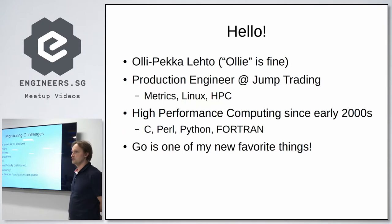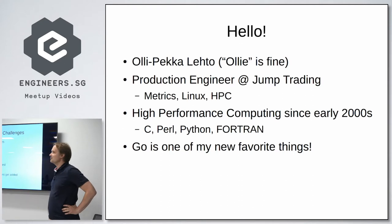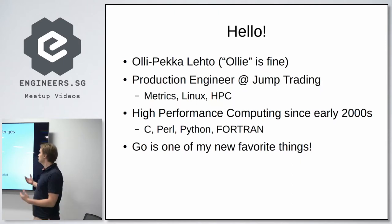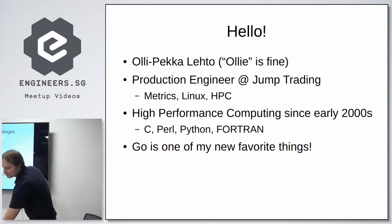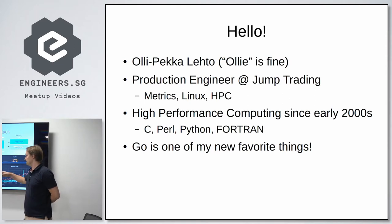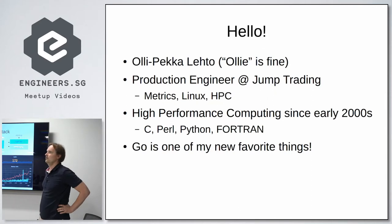At Jump, we have a lot of servers, switches, applications, all kinds of interesting hardware. It's very geographically distributed and we have a very high velocity — we get new servers, decommission them, move them around. A lot of new applications get added all the time. So monitoring and keeping track of all of that is quite difficult. What we use to monitor it is the TICK stack: Telegraph, InfluxDB, Chronograph — we actually use Grafana and Capacitor instead.